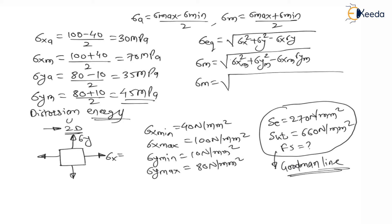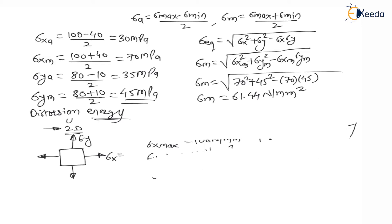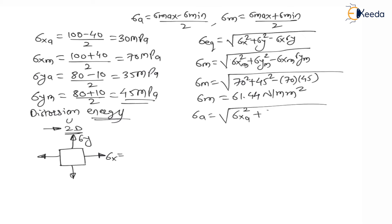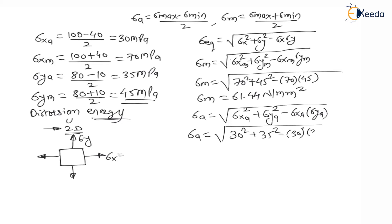The equivalent mean stress = √(70² + 45² − 70×45) = 61.44 N/mm². Similarly, the equivalent stress amplitude σa_eq = √(σxa² + σya² − σxa·σya) = √(30² + 35² − 30×35) = 32.79 N/mm².